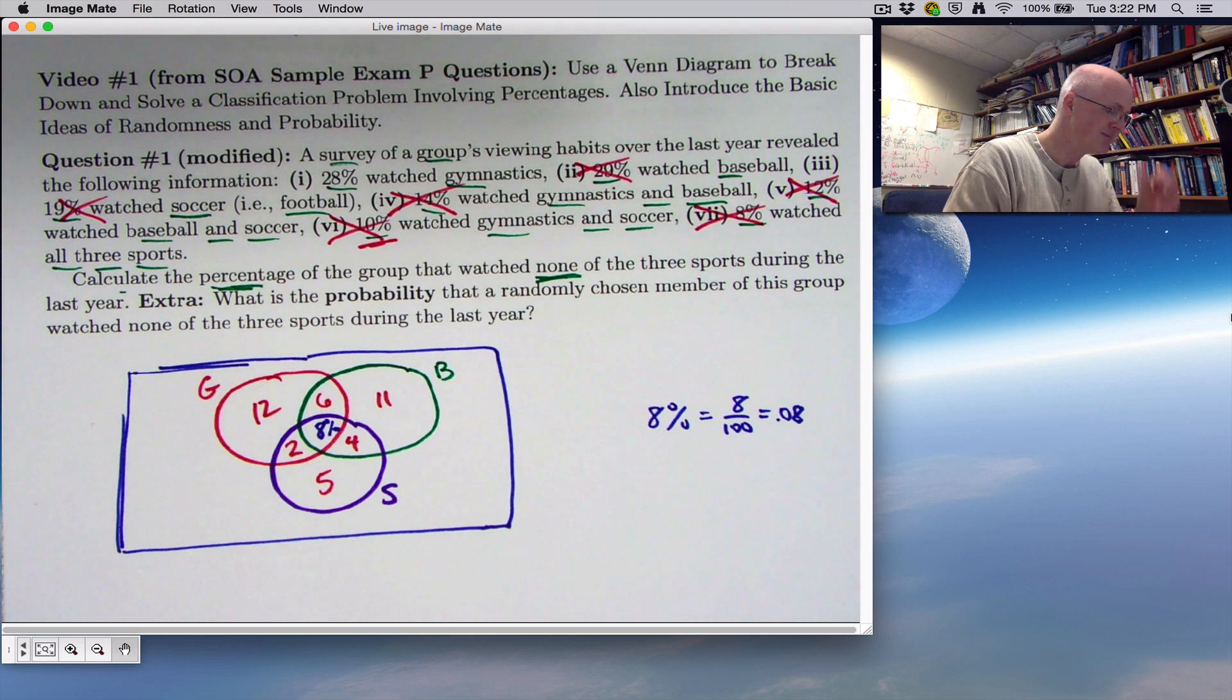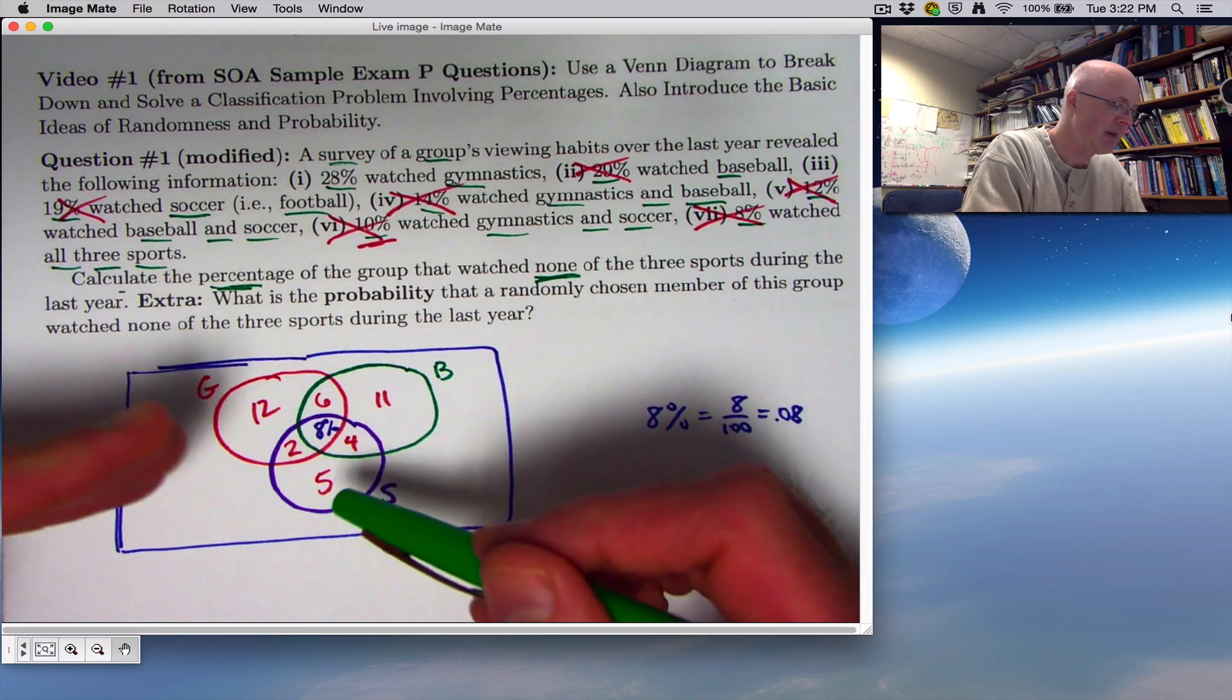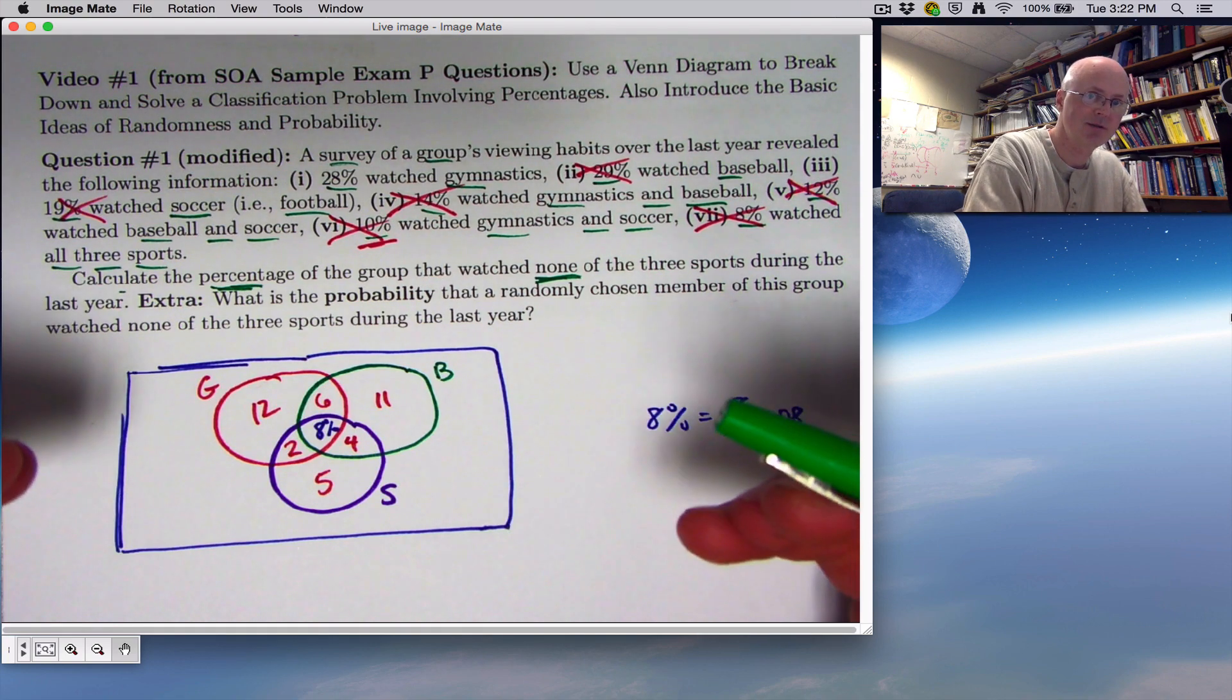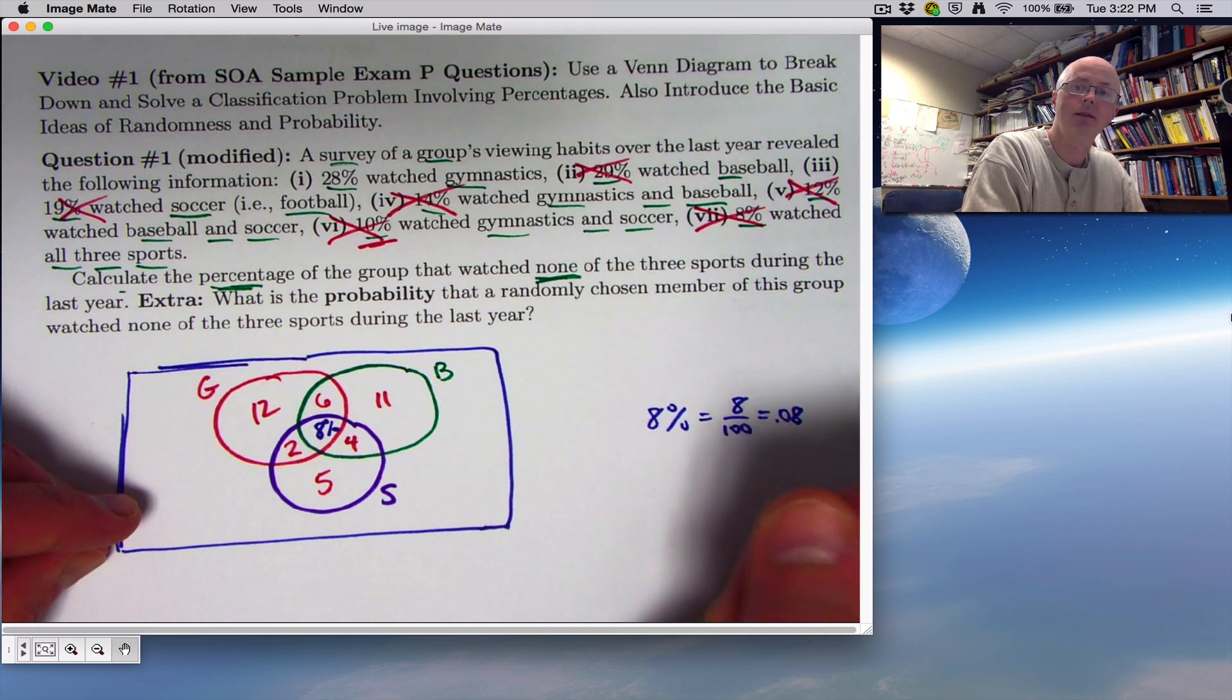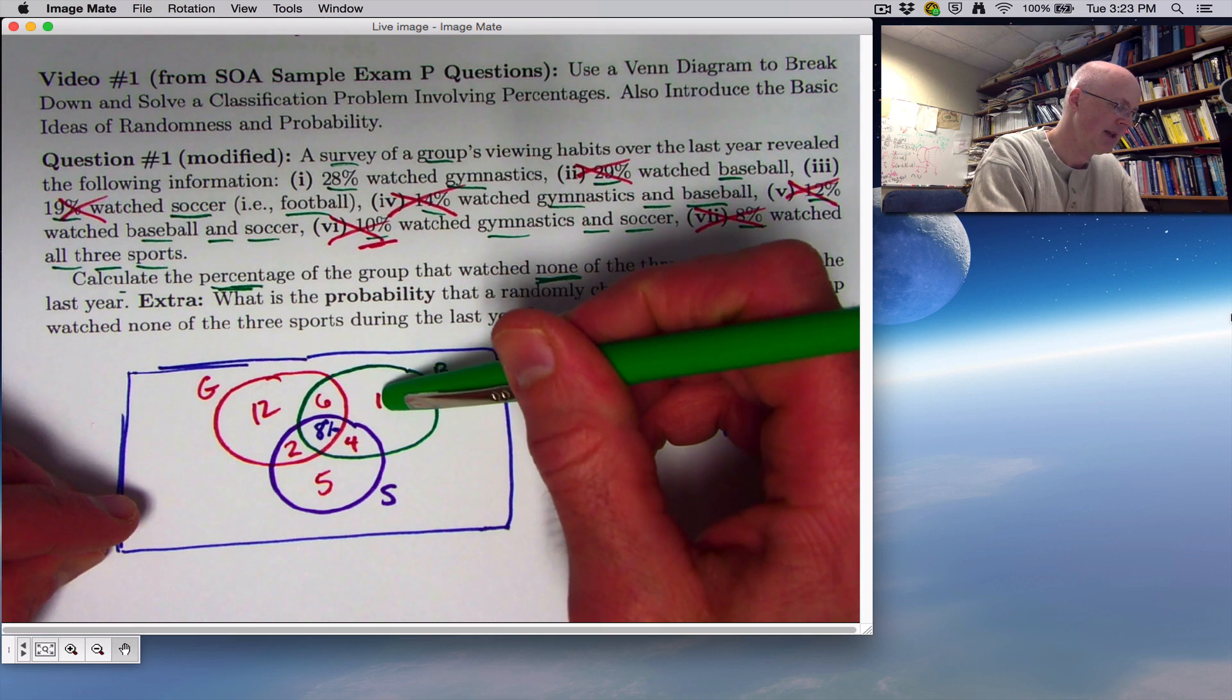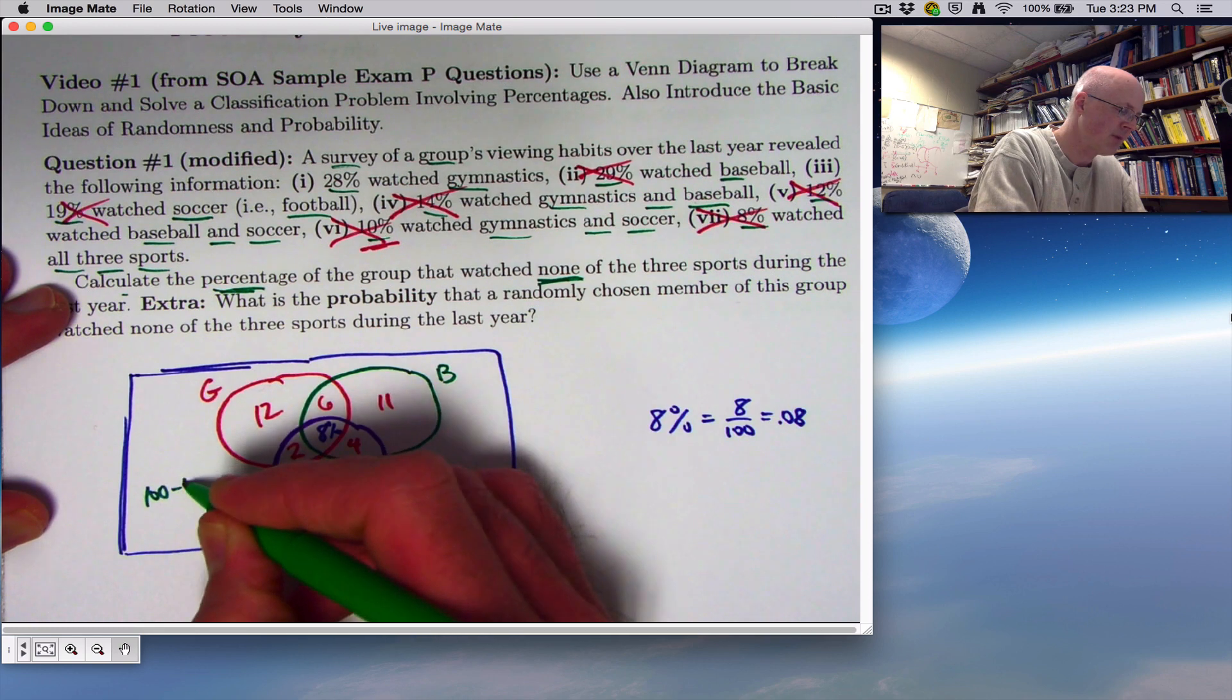Are we done? No. We haven't solved the question yet. The goal is to calculate the percentage that watched none, that are not standing in any of these circles. Since the numbers that I've labeled here represent each of these pieces individually, they will add up to a certain percentage in this case that I am short of 100%. In other words, whatever these add up to, take 100 minus that number to get the percentage of people that are standing outside of all three circles, meaning they watch none of those three sports.